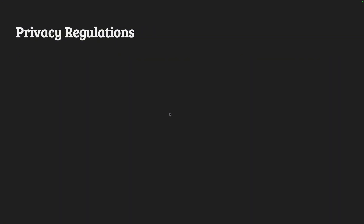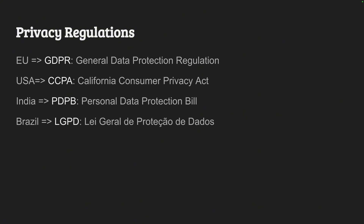There are different kinds of rules and regulations involved here, and the rules vary from country to country. This is called privacy regulation. In the European Union it is called General Data Protection Regulation, GDPR. There are also other cases: CCPA — California Consumer Privacy Act — for California; VDPB for India; and LGPD for Brazil.